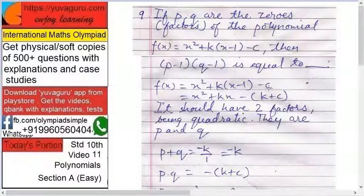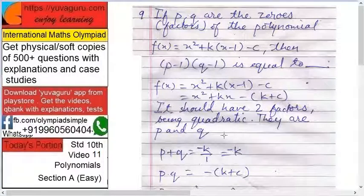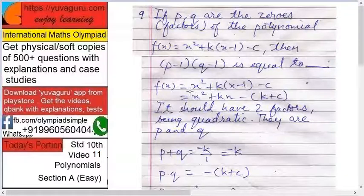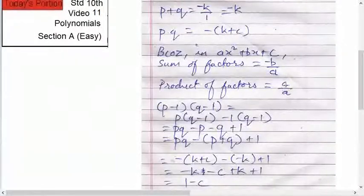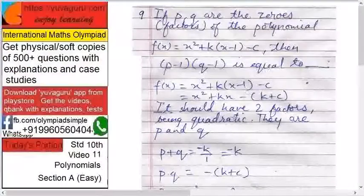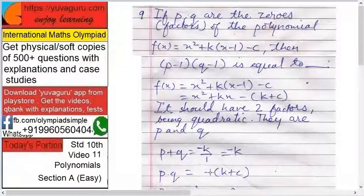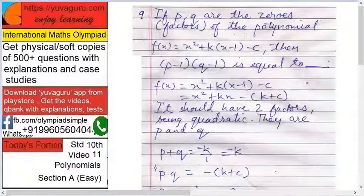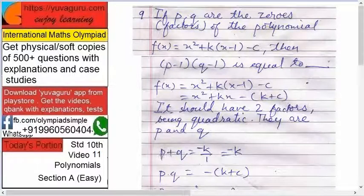That is minus k. And product of the factors c upon a. c is what along with this minus sign: minus k plus c upon one. Remember it is c upon a. In our equation it is minus. Take minus sign also, do not forget this minus sign.